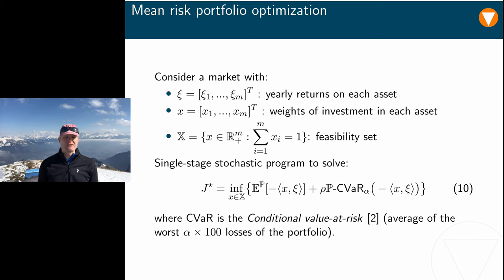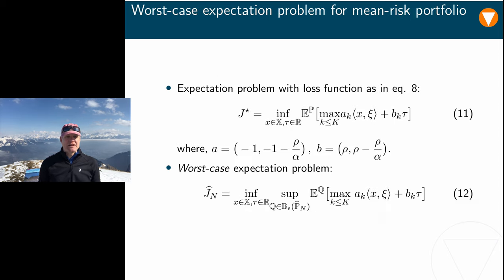This translates to a single-stage stochastic program akin to the one discussed at the beginning of this video. The conditional value at risk at level α represents the average of the worst α times 100 percent losses of the portfolio under the distribution P. Using the definition of the CVaR by Rockafellar and Uryasev, we can easily translate the problem stated to one that involves a loss function that is a point-wise maximum of linear component functions.